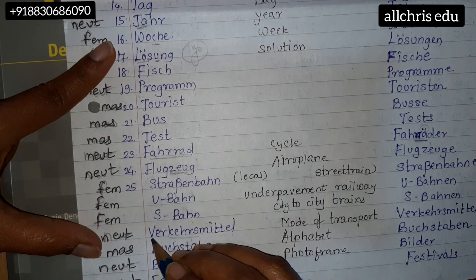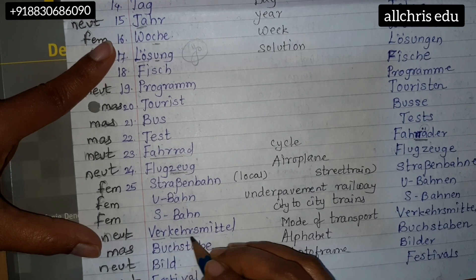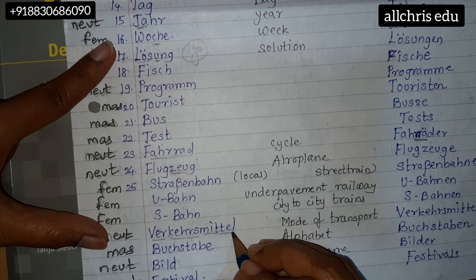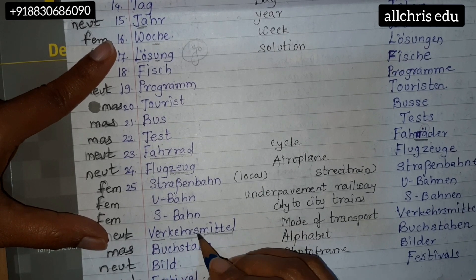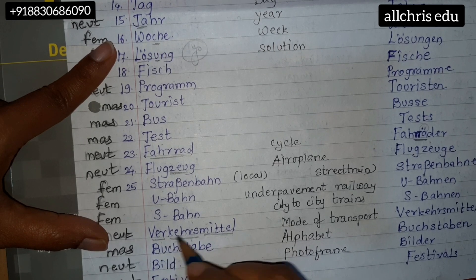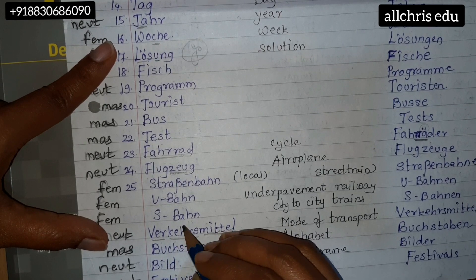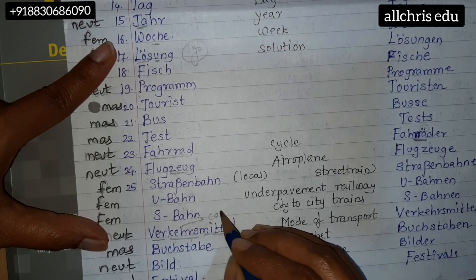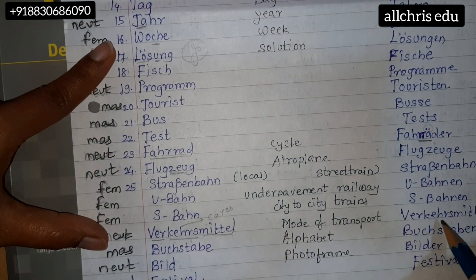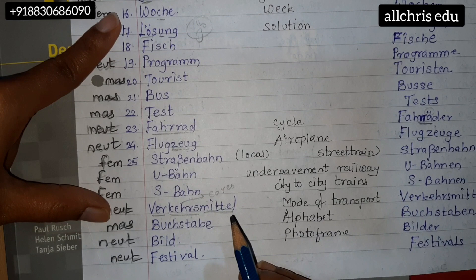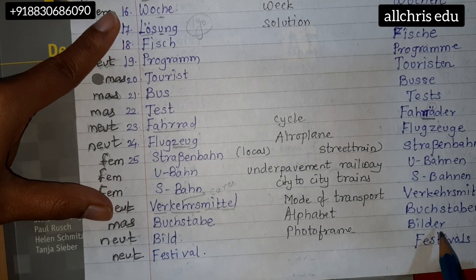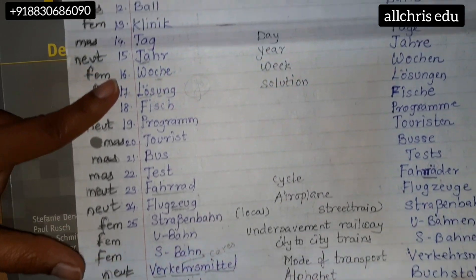Verkehrsmittel — underline the word 'V-R', and K-E-H-R-S — you can say like 'cares'. Verkehrsmittel. Buchstabe, Buchstaben. Bild, Bilder. Festival, Festivals.